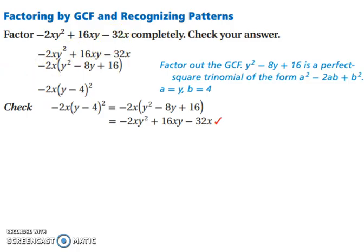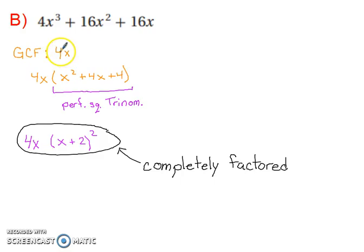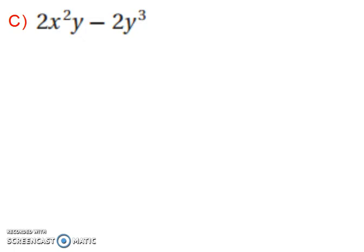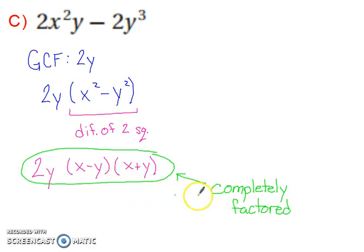Pause the video and try the next problems on your own. For the first one, we have a greatest common factor of 4x — pull that out, and you're left with a perfect square trinomial. Factor that, and you get 4x times the quantity x plus 2 squared, completely factored. For the next one, the greatest common factor is 2y. Factor that out, and you're left with x squared minus y squared, which is a difference of two squares. So the answer is 2y times the quantity x minus y times the quantity x plus y.